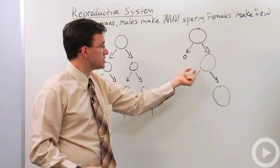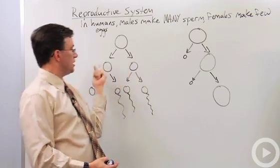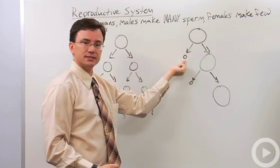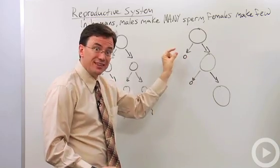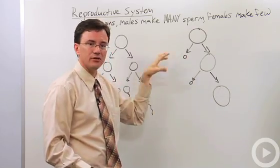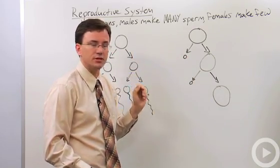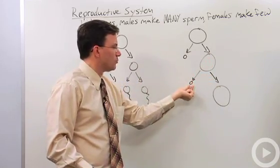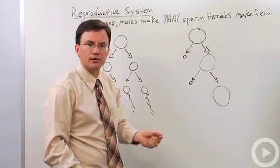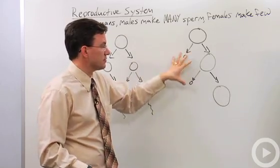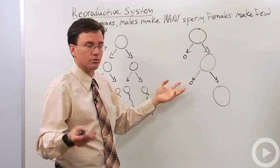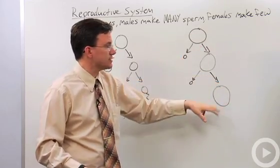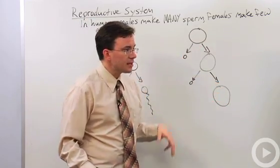When females undergo the first division of meiosis, instead of equal cytokinesis, one cell gets most of the cytoplasm and the other winds up with very little — basically just a place to put the chromosomes they don't need. When that cell undergoes meiosis again, you get tiny polar bodies, which are just dumping grounds for the unneeded chromosomes. This leaves an egg roughly the size of the original starting cell.